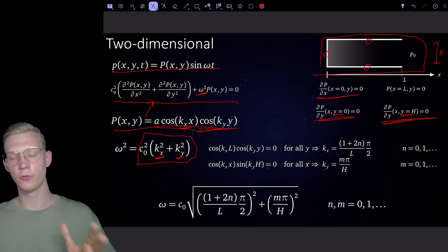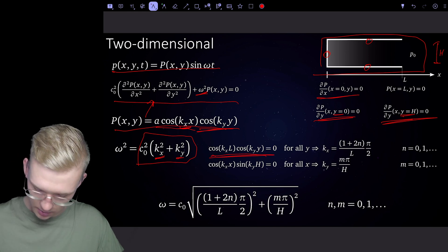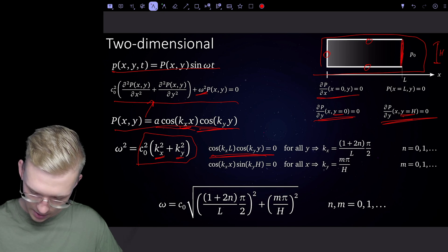Now we solve for the boundary conditions to get our kx's and ky's. We know that the pressure at the end of our tube, for each y, is equal to zero, so for all y.